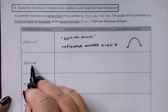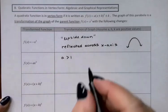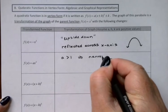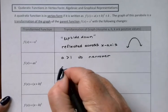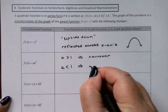We also saw that when we put a multiplier in front of the x squared, when the multiplier was greater than 1, the parabola got narrower. And when the multiplier was less than 1, it got wider.